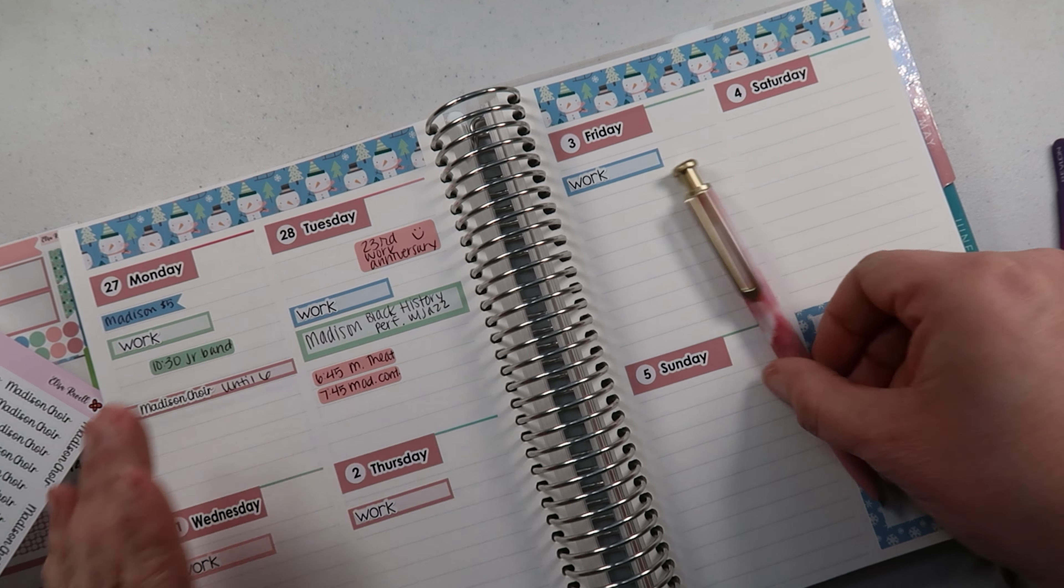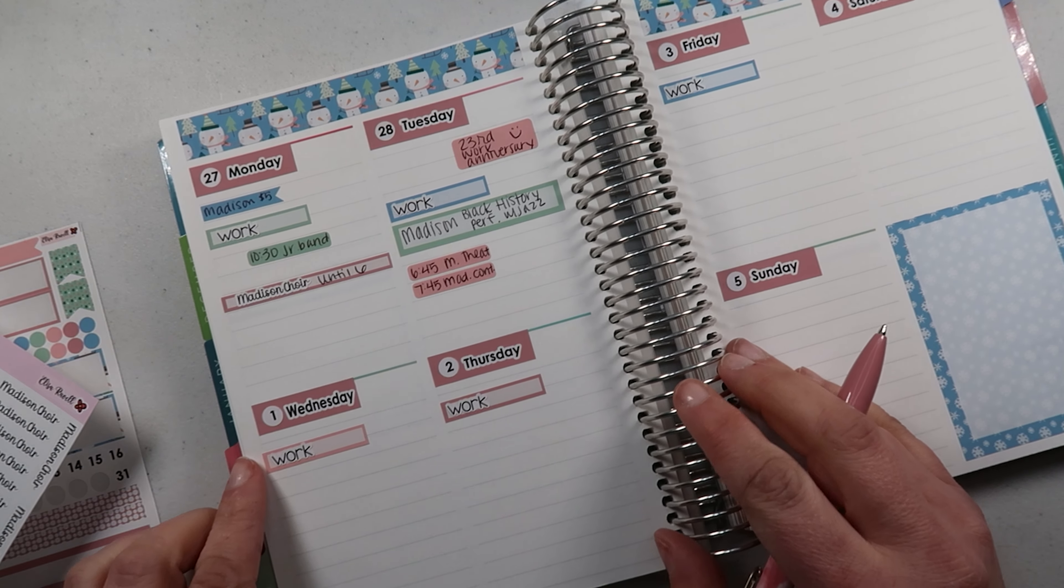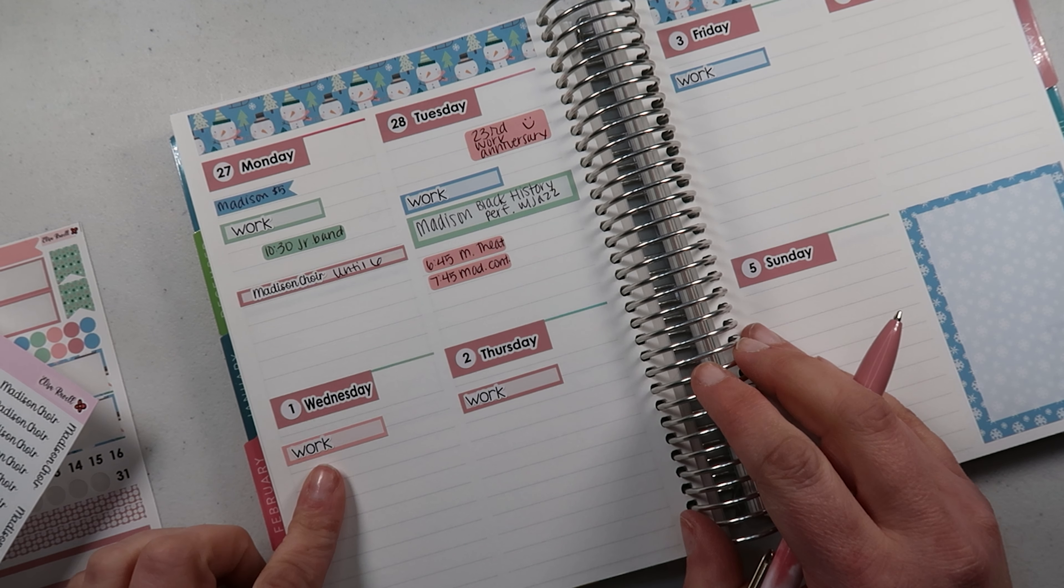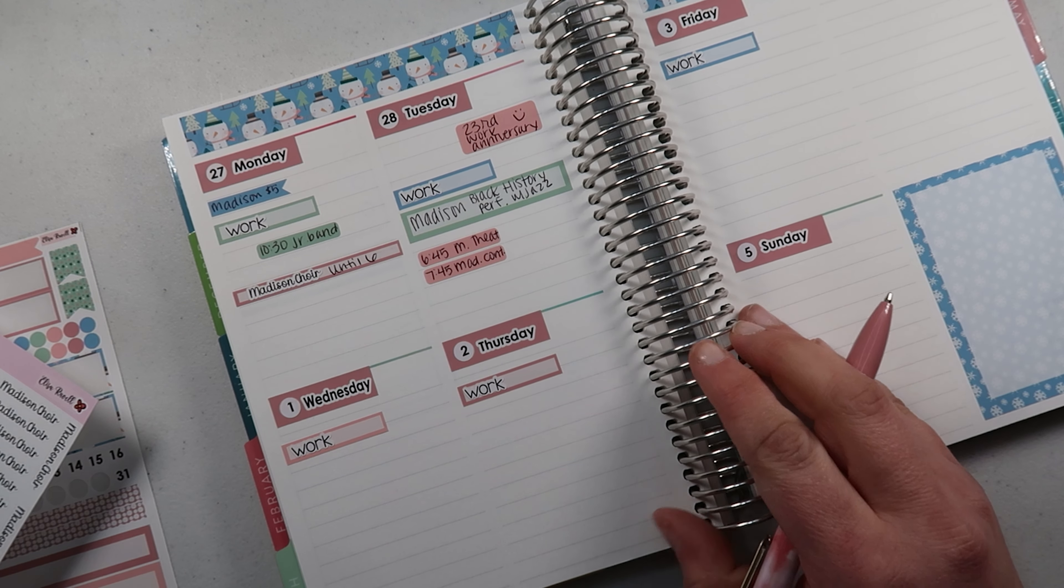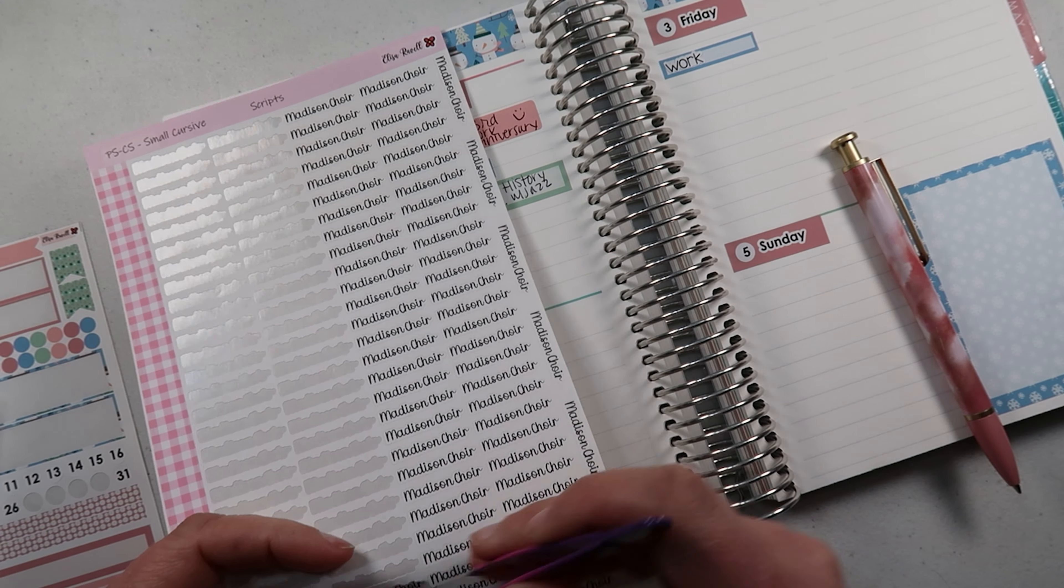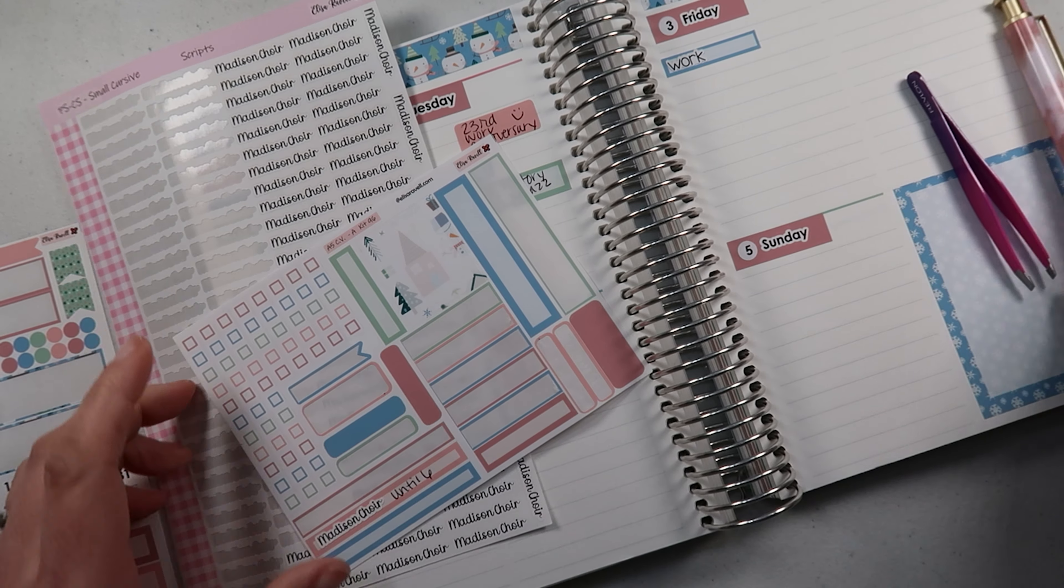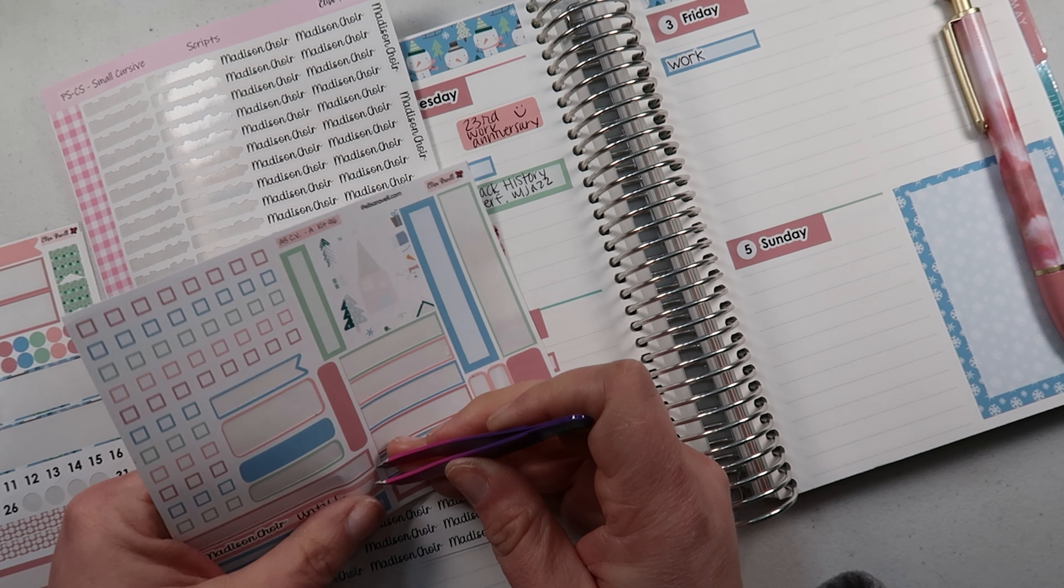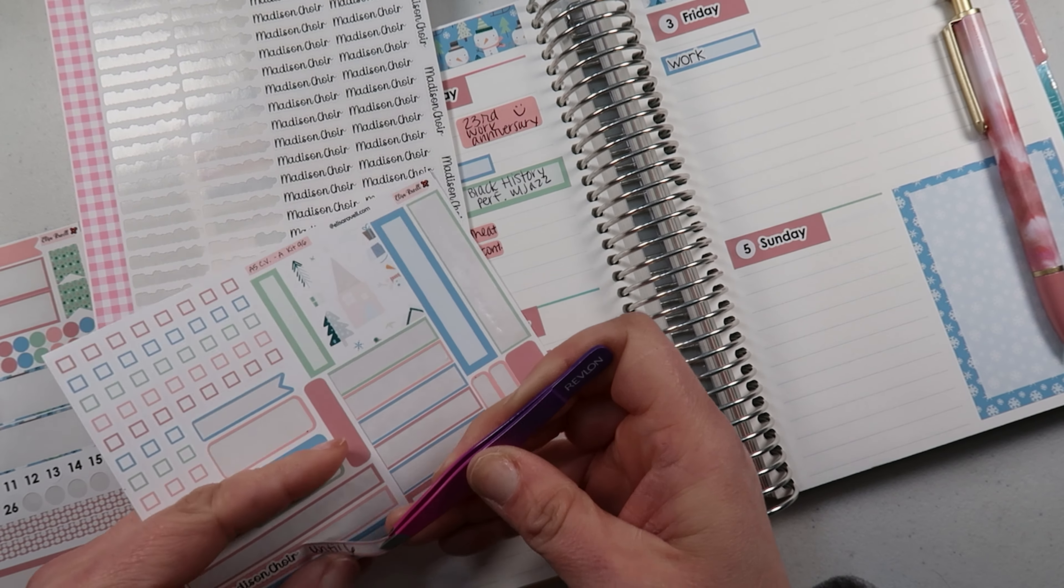All right, that's awesome right there. And then Wednesday I have to work, and then Madison has choir, and then the girls have technique. So let's put on a choir reminder. And so far I don't need any help yet, so that's good. Technique class, awesome.